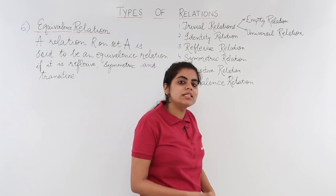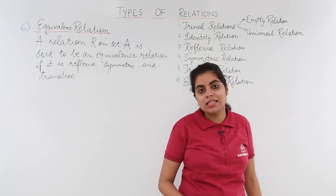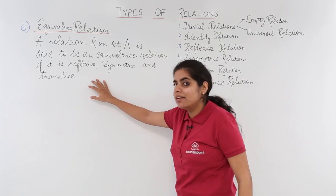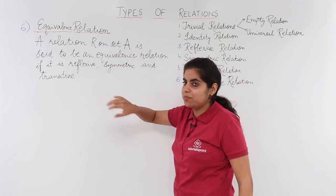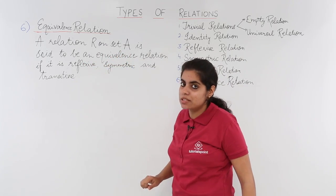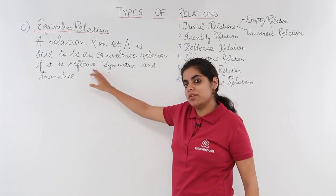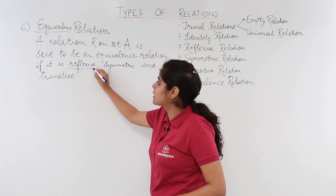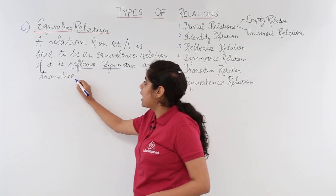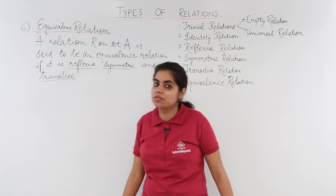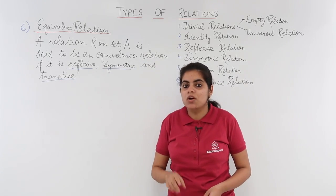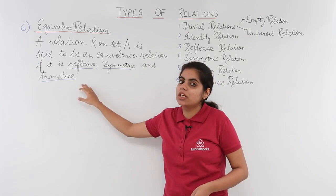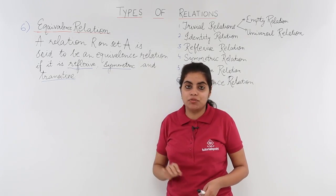Now what is an equivalence relation? As the definition is written over here, a relation R on set A is said to be an equivalence relation if it is reflexive, symmetric, and transitive. I am underlining the important terms: if it is reflexive, it is symmetric, and it is transitive. For a relation to be an equivalence relation, all three conditions have to be satisfied.